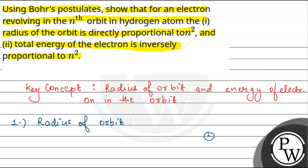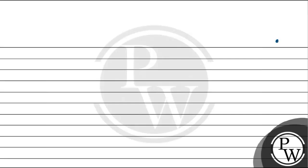So first, let's look at the expression for radius of orbit. Radius means — if there is any nucleus, and the electron revolves around it in some orbit, then the distance from the center of the nucleus to the orbit is called the radius. This is r, the radius. According to Bohr's postulates, the electron here has a force acting on it due to protons, which is k·q1·q2 / r².